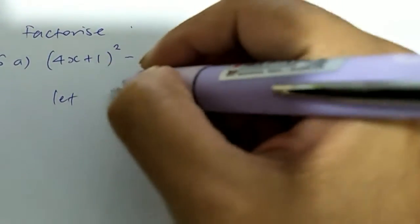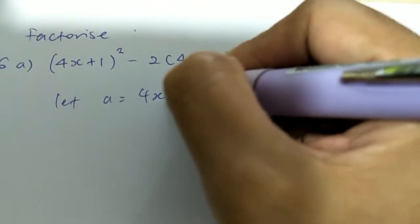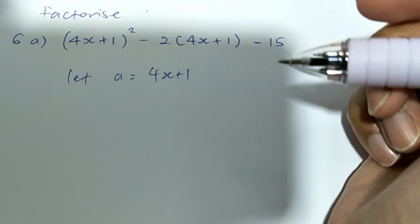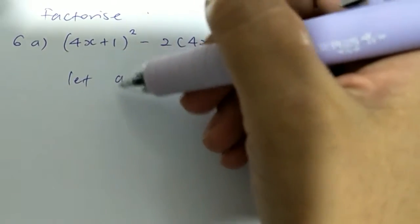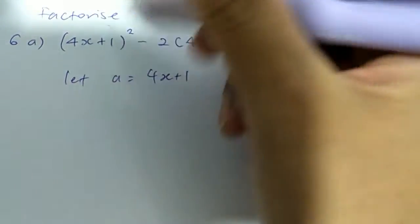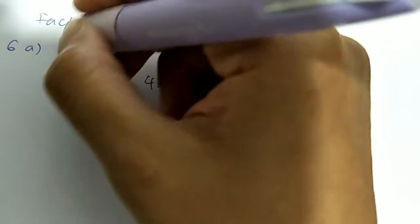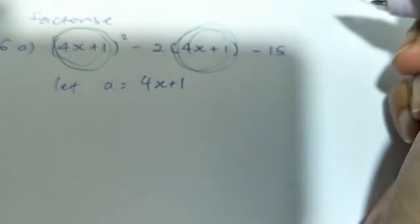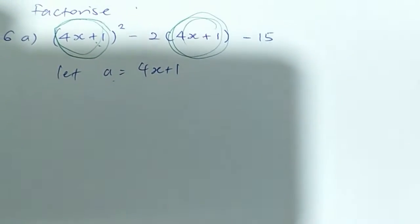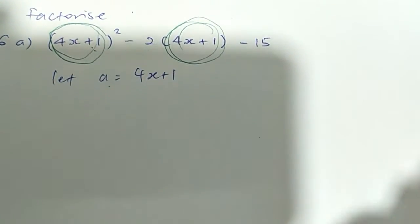So you let a equals to 4x plus 1. You don't choose x equals to 4x plus 1, that's just confusing. So you just give another alphabet to represent this whole thing. So you are taking this one and this one as if it's one term. You're replacing the whole thing with a.